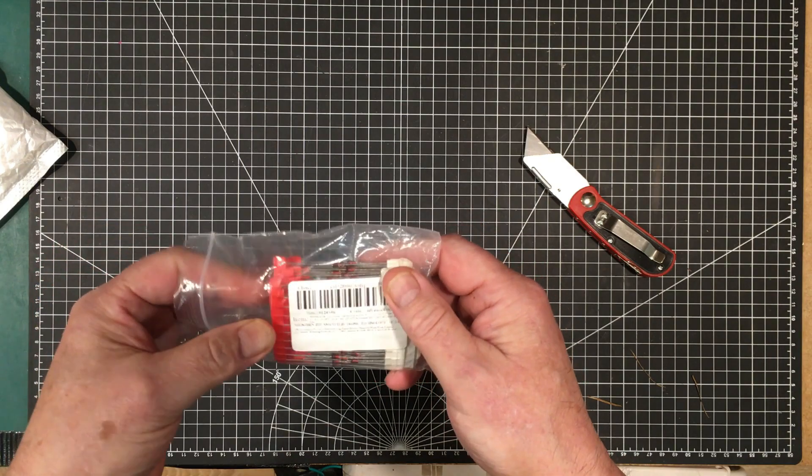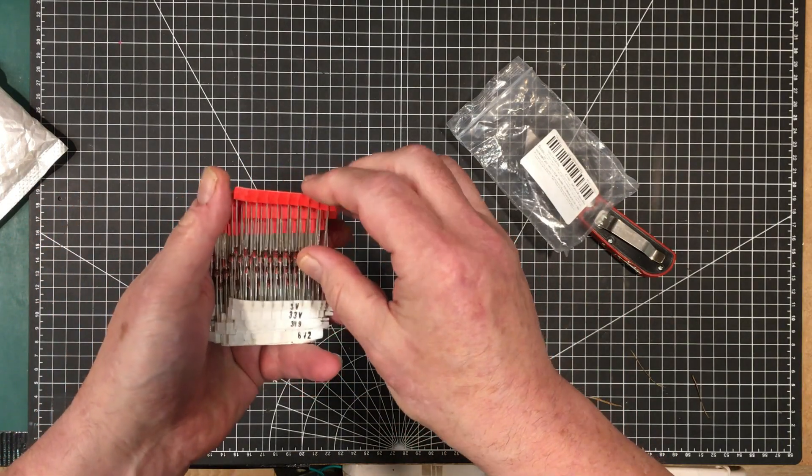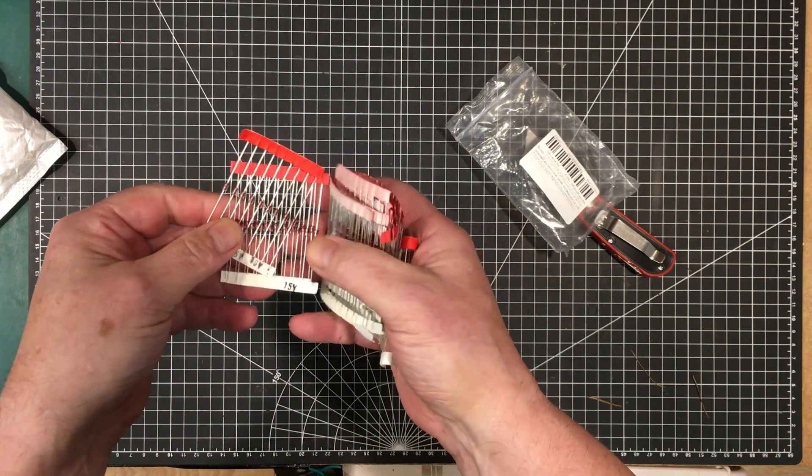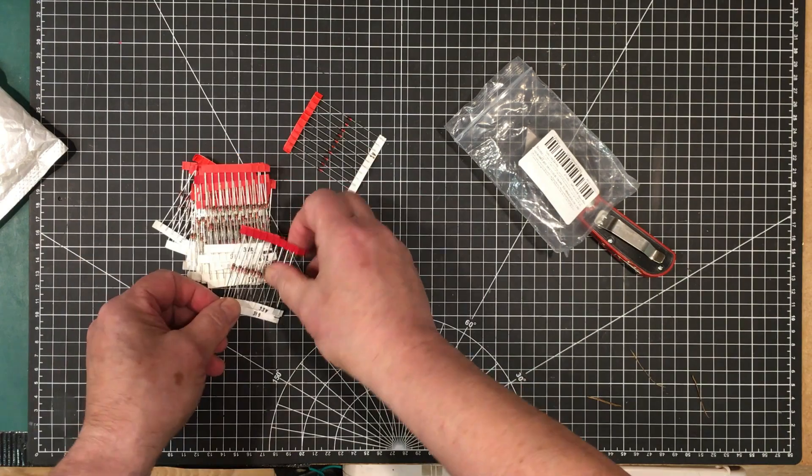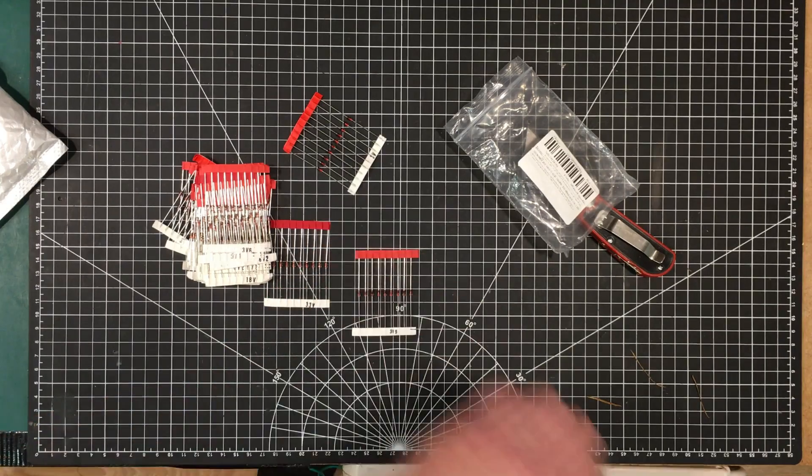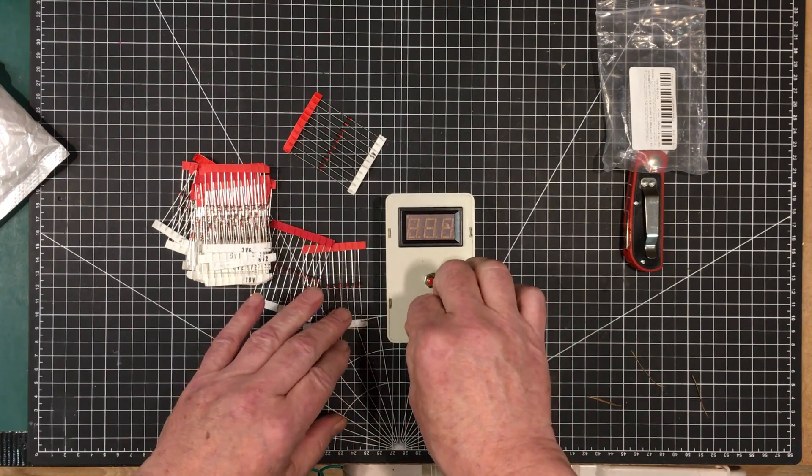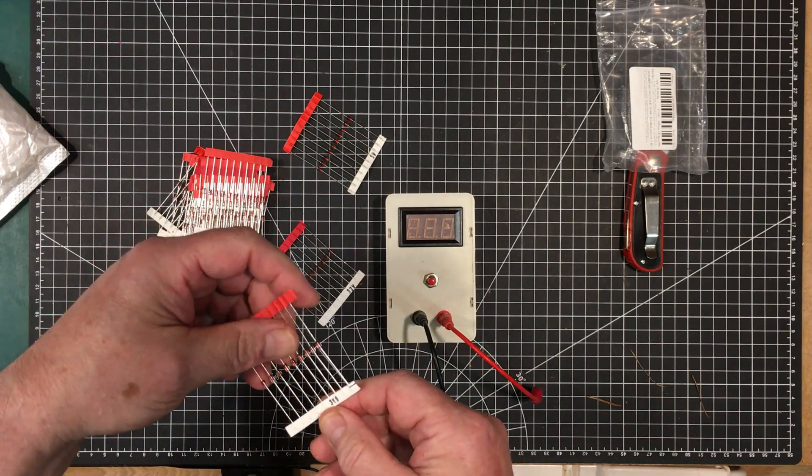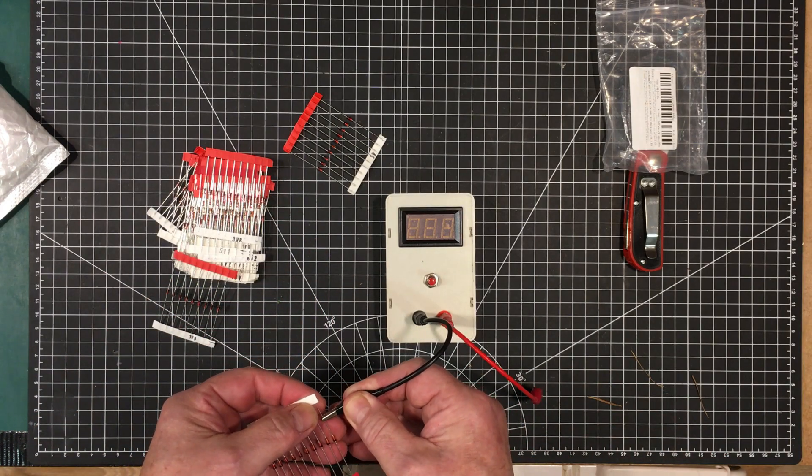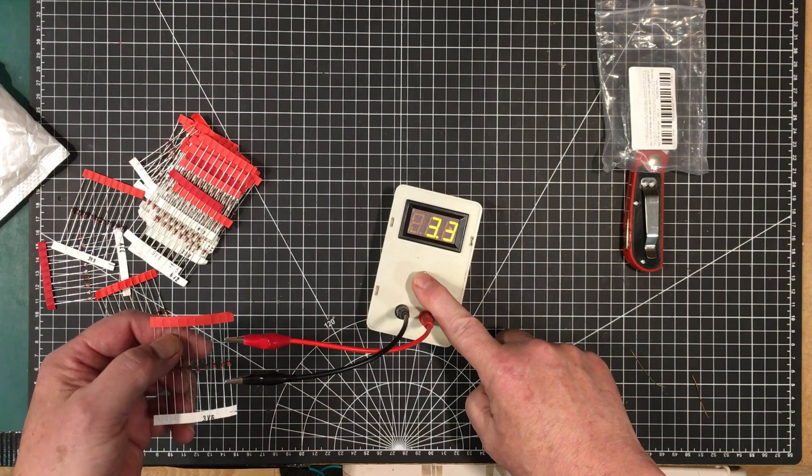Yeah, a set of different Zener diodes. There's supposed to be like 20 different values in here. Three volt, 3.3 volt, 3.9 volts, all the way up to 36 volts. And I'm thinking of putting maybe a 3.3 or 3.9 volt into that power supply just to reduce the negative voltage swing a little bit. It should still be plenty enough to provide proper operation, but it will reduce the voltage across the operational amplifiers by another volt and a half or so.